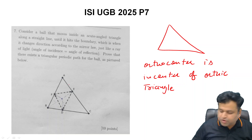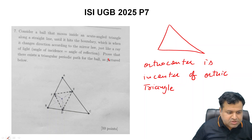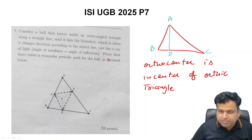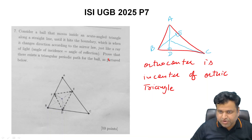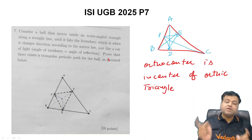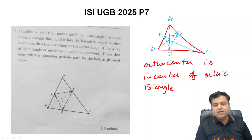The orthic triangle is formed by joining the feet of the perpendiculars. So let's say ABC is a triangle. We drop a perpendicular from A onto BC, call it AD; drop a perpendicular from B onto AC, call it E; and drop a perpendicular from C, call it F. Then triangle DEF is nothing but the orthic triangle.